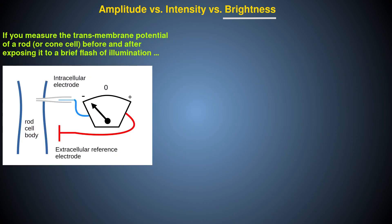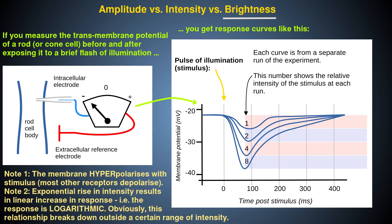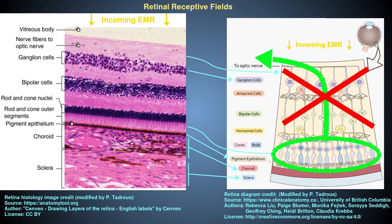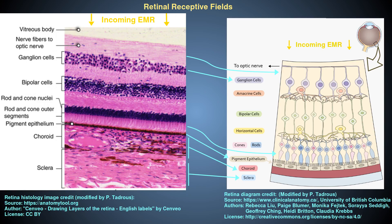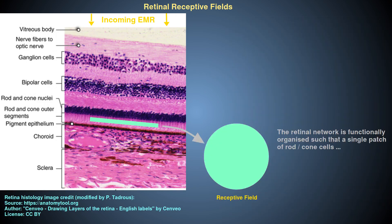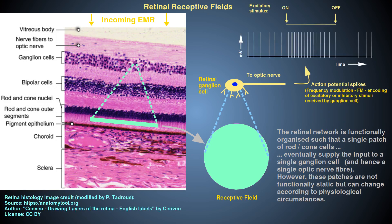The membrane potential of the primary photoreceptor cells — the rods and cones — responds to intensity of EM radiation via a logarithmic response curve. This basic signal does not go to the optic nerve directly, but passes to the retinal ganglion cells via a network of intermediate cells including the bipolar, horizontal, and amacrine cells, which integrate rod and cone signals from a small patch of retina called a receptive field onto the dendrites of a single ganglion cell. The action potential spike signals from this ganglion cell are then conducted down the optic nerve in a frequency-modulated system of pulses.